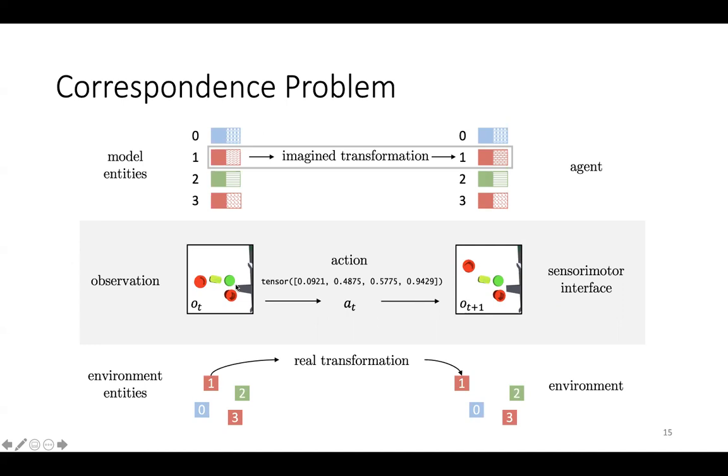In this example, we want entity 1, the agent's representation at index 1, to correspond to one of the red cups, such that moving the red cup in the environment corresponds to applying a transformation to entity 1, while leaving the other entity representations unchanged.